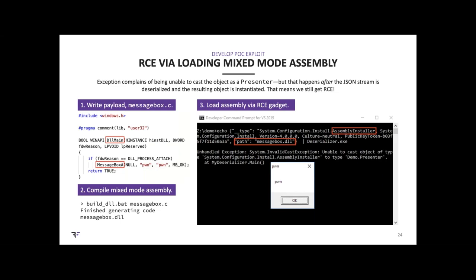This is a really important point: even though we get an exception, our code still works. The process of the stream being deserialized and the object being instantiated all happens before the resulting object is attempted to be cast as a Presenter — which means we still get remote code execution. The main issue here — what makes this application vulnerable — is that the program is deserializing untrusted input directly from a user, passed on the command line or in a real vulnerability, likely over the network.